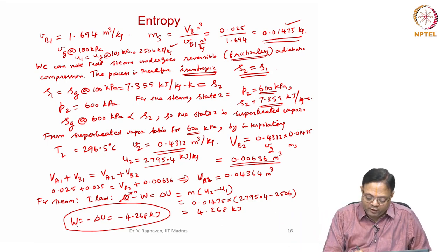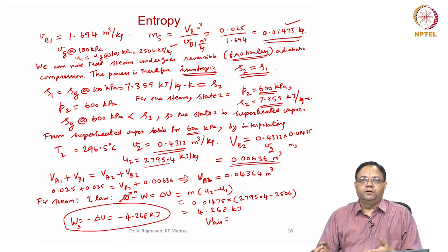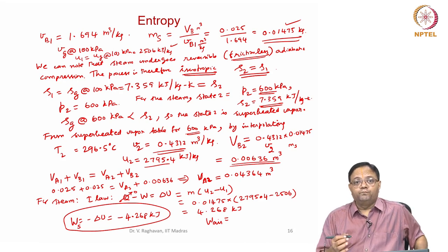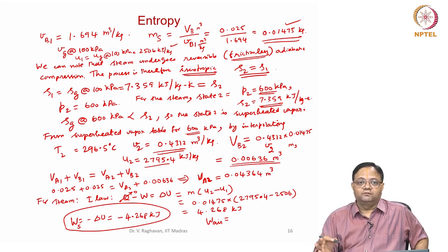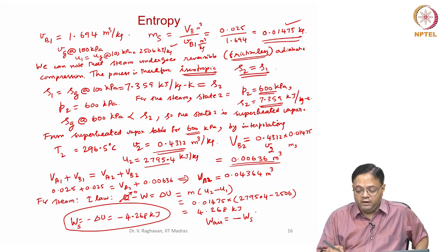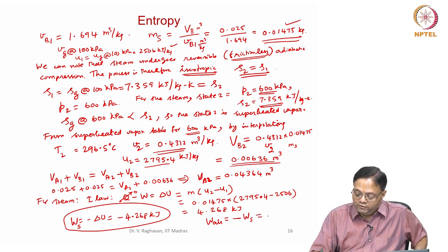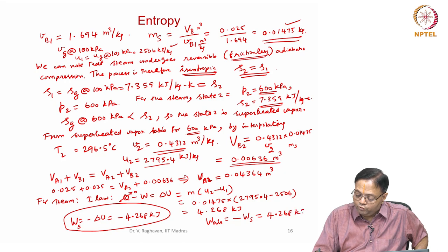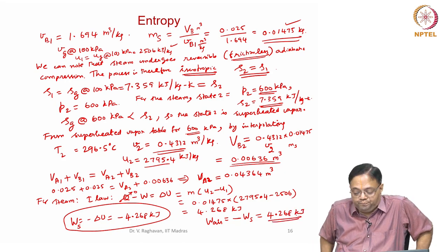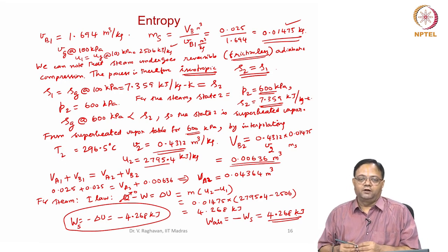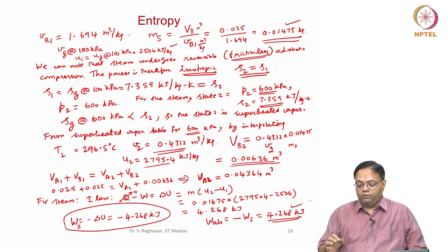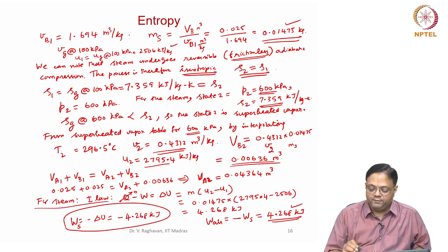The work done on steam comes from the air chamber. Since the only neighbour of the steam chamber is the air chamber, W_air equals minus W_steam equals positive 4.268 kJ. This displacement work was calculated for the steam chamber; since the only environment for the steam is air, this work has to come from the air chamber — that is the key step.